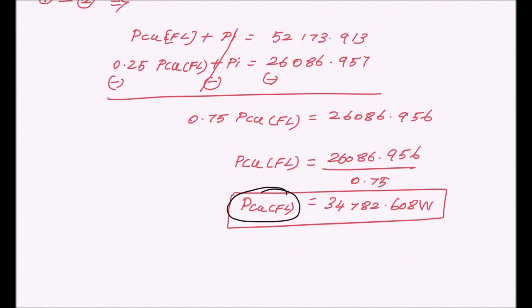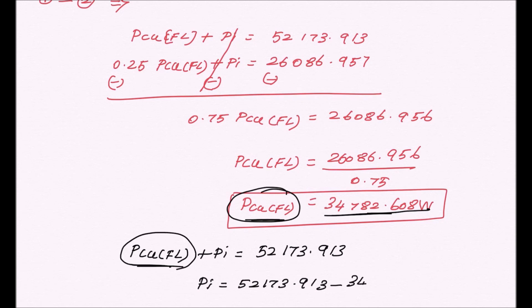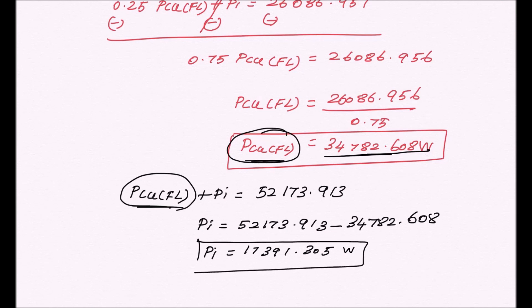Now substitute the full load copper loss back into equation 1 to find the iron loss. Full load copper loss + iron loss = 52,173.913. So iron loss = 52,173.913 − 34,782.608 = 17,391.305 W. We have now found both the full load copper loss (34,782.608 W) and the iron loss (17,391.305 W).